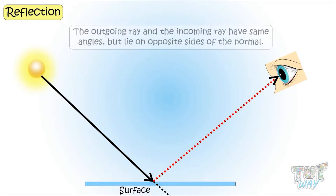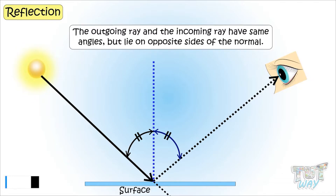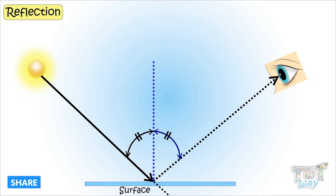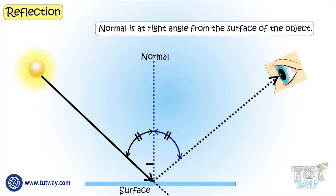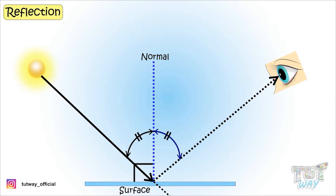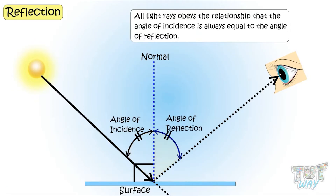The outgoing ray and the incoming rays have the same angles but on opposite sides of the normal. This dotted line is called the normal, which is an imaginary line. The normal is at a right angle to the surface of the object. All reflected light obeys the relationship that the angle of incidence always equals the angle of reflection.